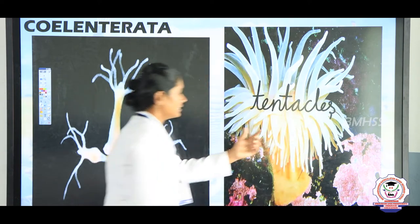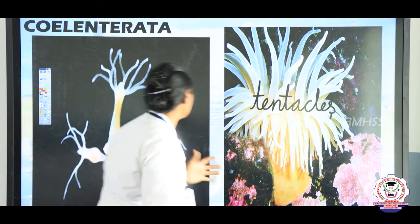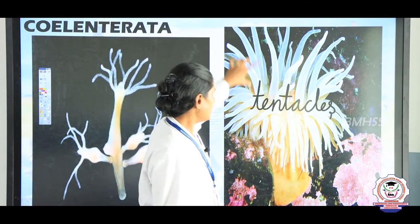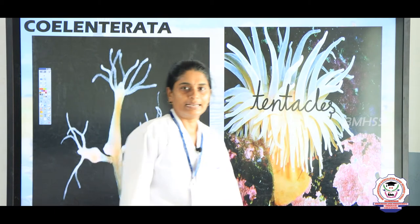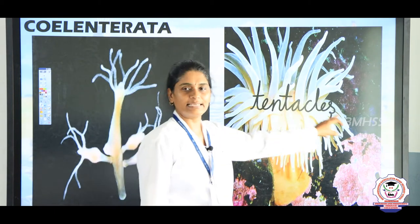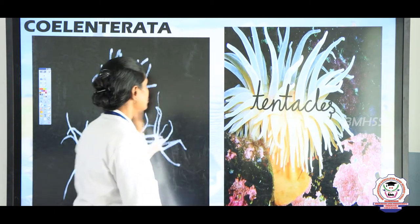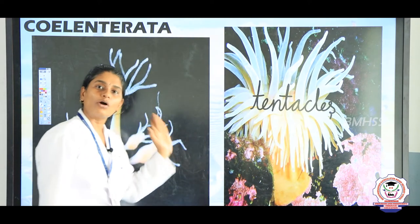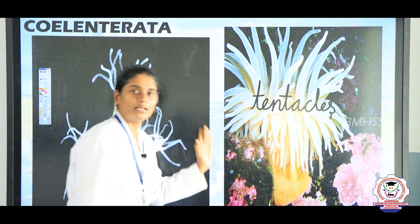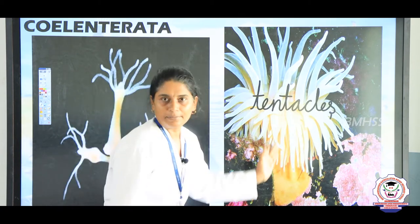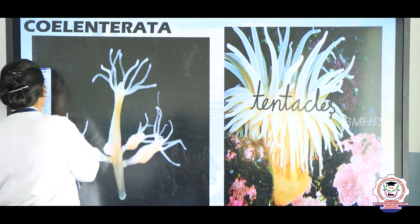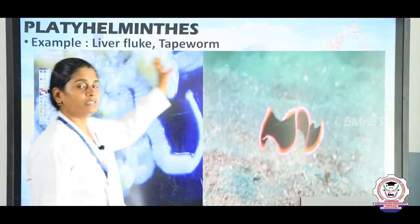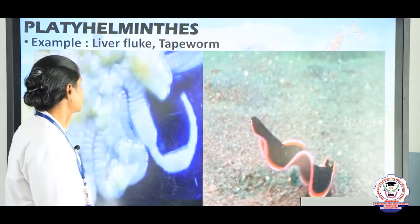Both sea anemone and Hydra have tentacles surrounding the mouth. These finger-like structures are known as tentacles. These animals move from one place to another and are found only in the sea or in marine environments.